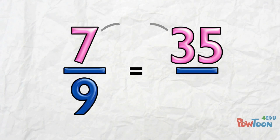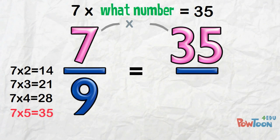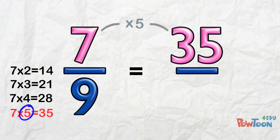How do we get from 7 to 35? We multiply. Okay, 7 times what is 35? Run through the 7 times table until you get to 5. 7 times 5 is 35.